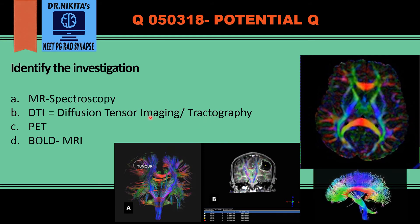You might also be given an image like this — a sagittal image giving the orientation of the white matter tracts. Remember that in DTI, the T stands for tensor imaging, or you could also remember T for tractography, which is done for white matter tracts.